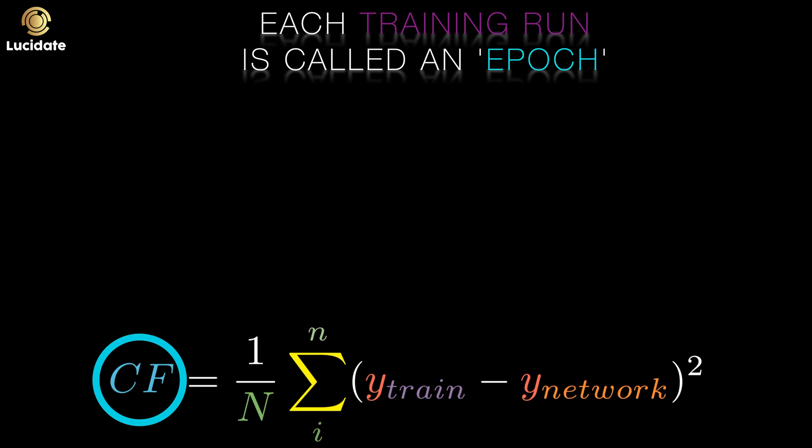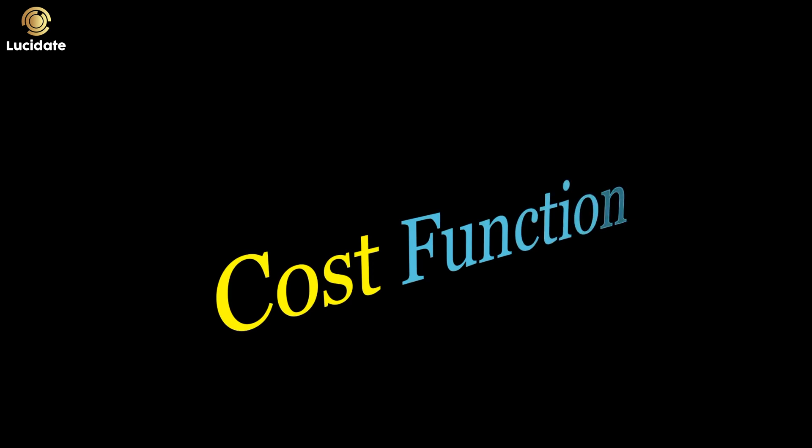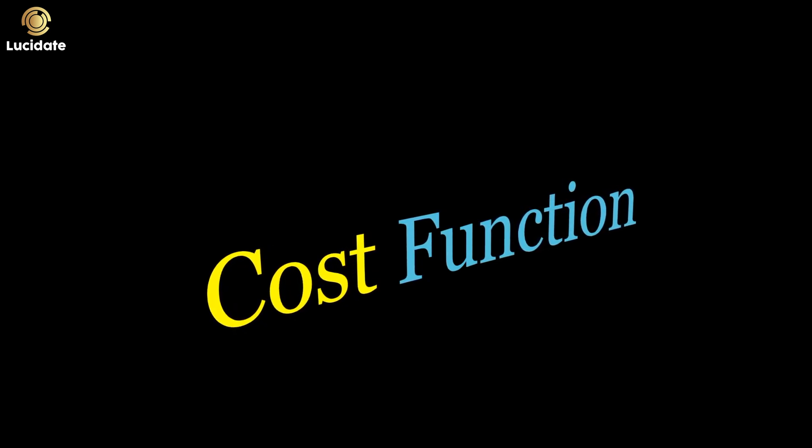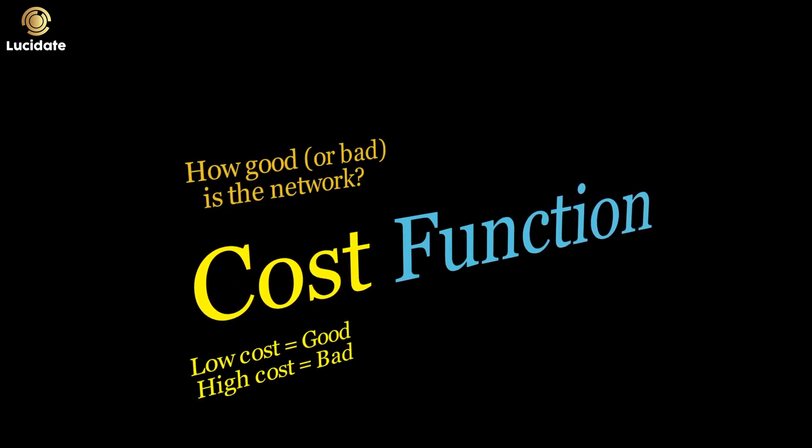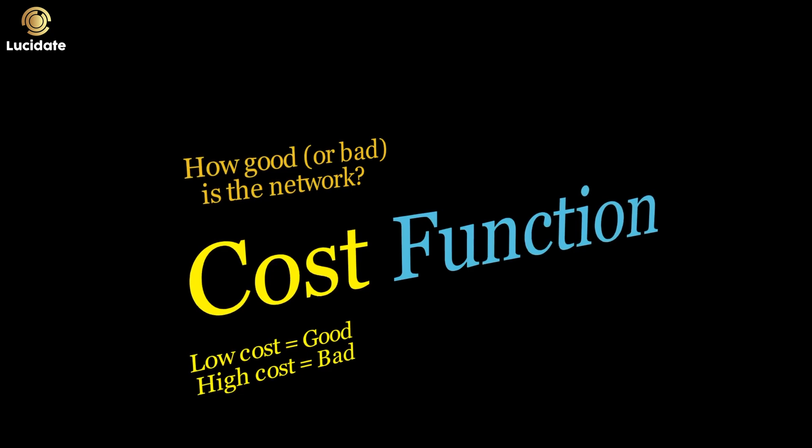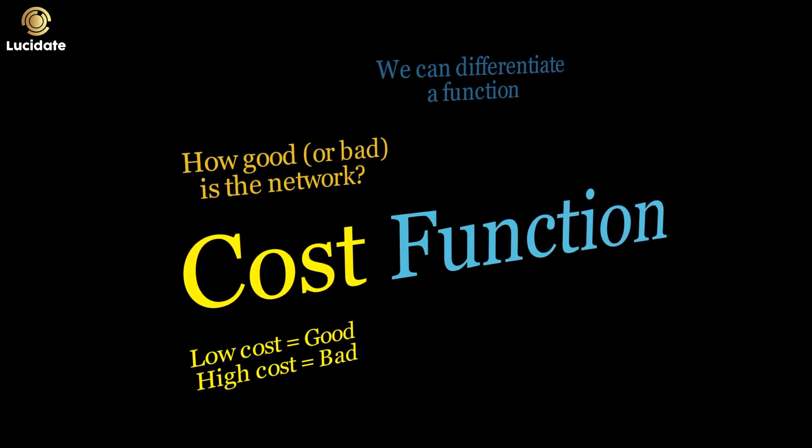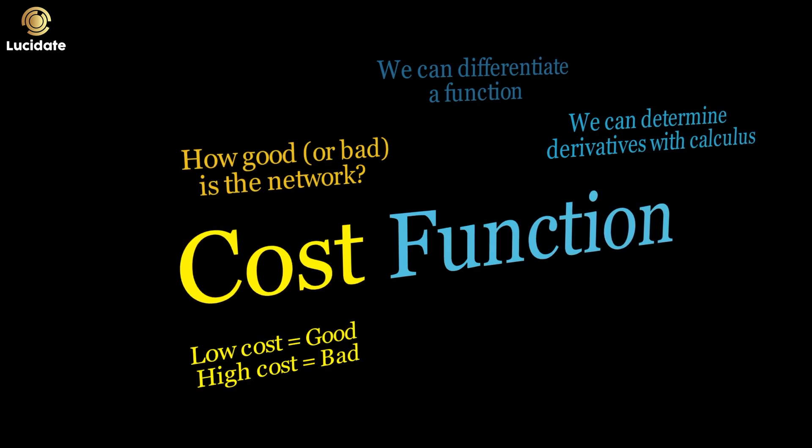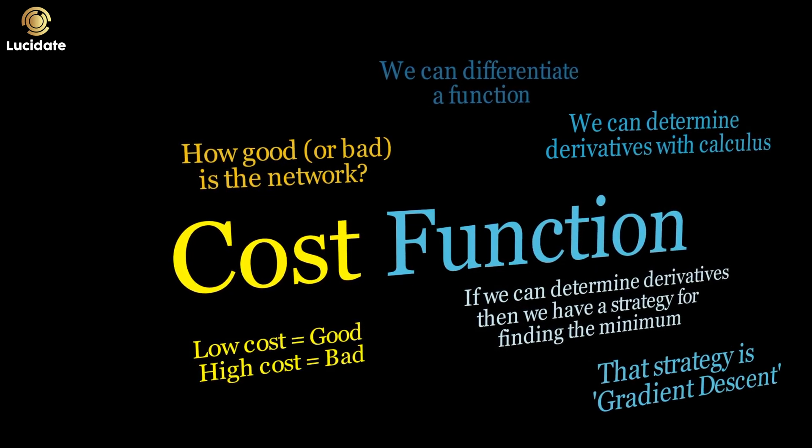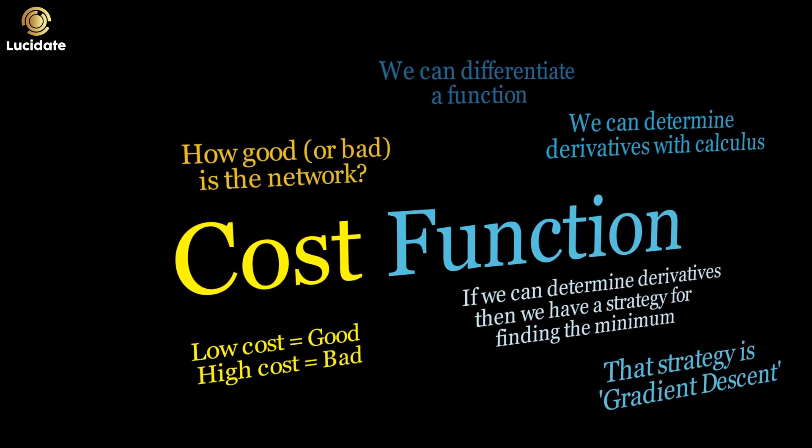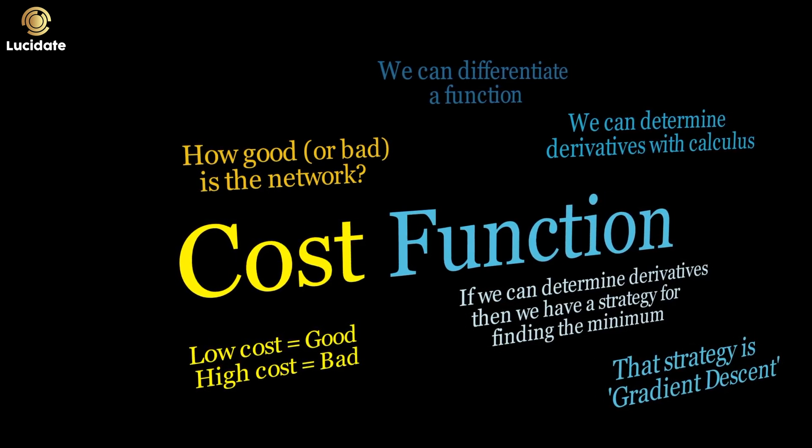We can use this cost and some fancy calculus to nudge our weights and biases to get a better set of outputs on the next epoch. The whole phrase cost function neatly sums things up. The cost bit measures how good or bad the network is. The function bit means that the function can be differentiated. We'll see in the next post how we use calculus to get the derivatives of the cost function, and use these derivatives as a mechanism to update our weights and biases.